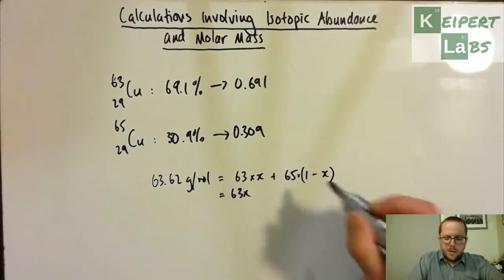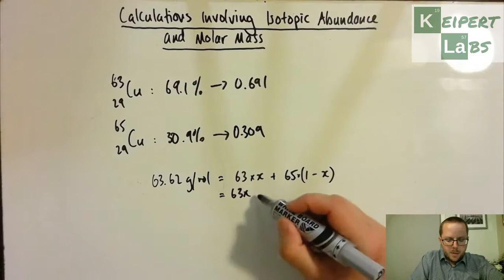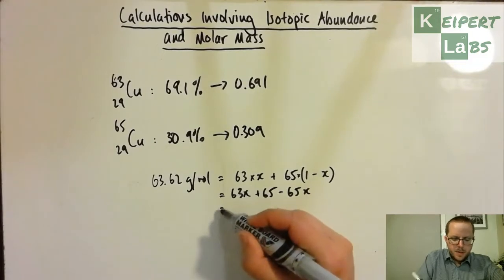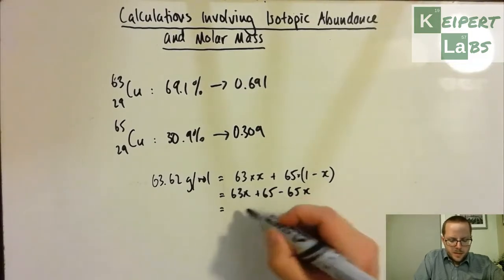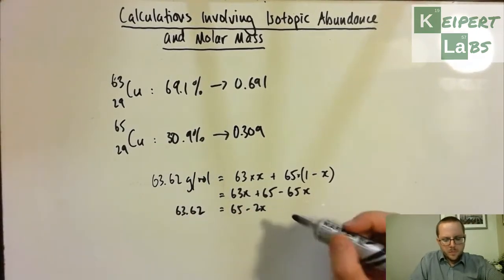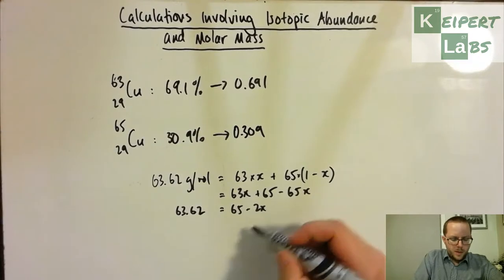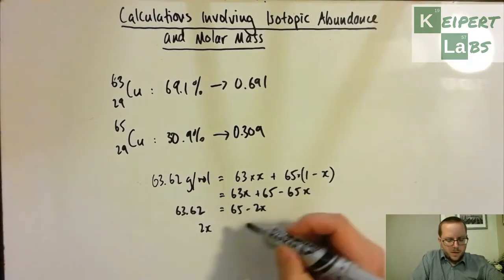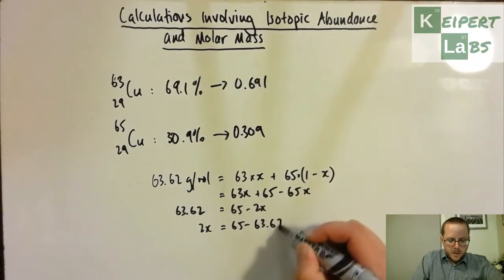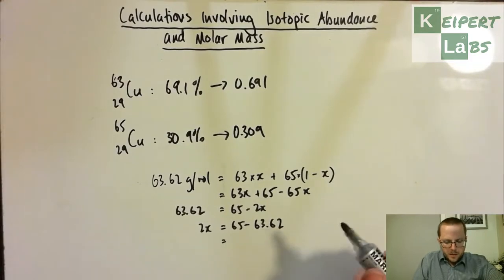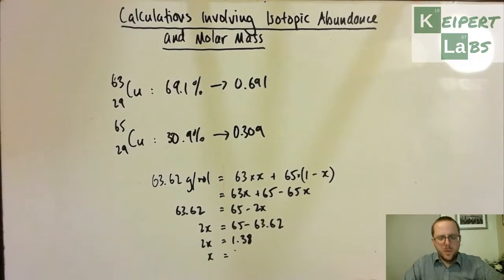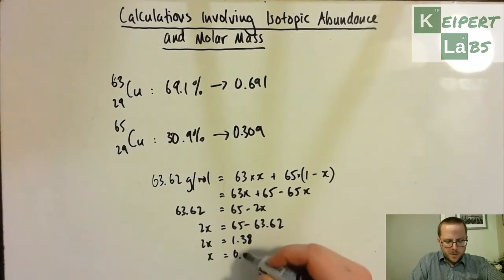So 63x, if we expand this out, so we get plus 65 minus 65x, grouping like terms. So we get 65 minus 2x is equal to 63.62. So we can move this over onto that side and then take this down over here.